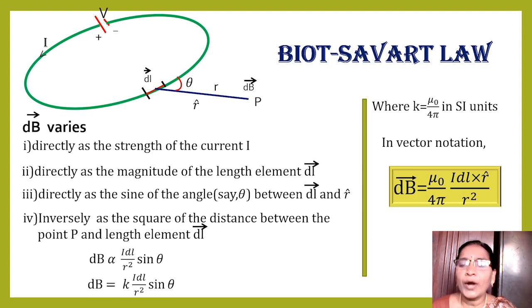Why do we write this DL cross R̂ unit vector? That is, it is said that the magnitude of the magnetic field is perpendicular to DL and also unit vector R̂.